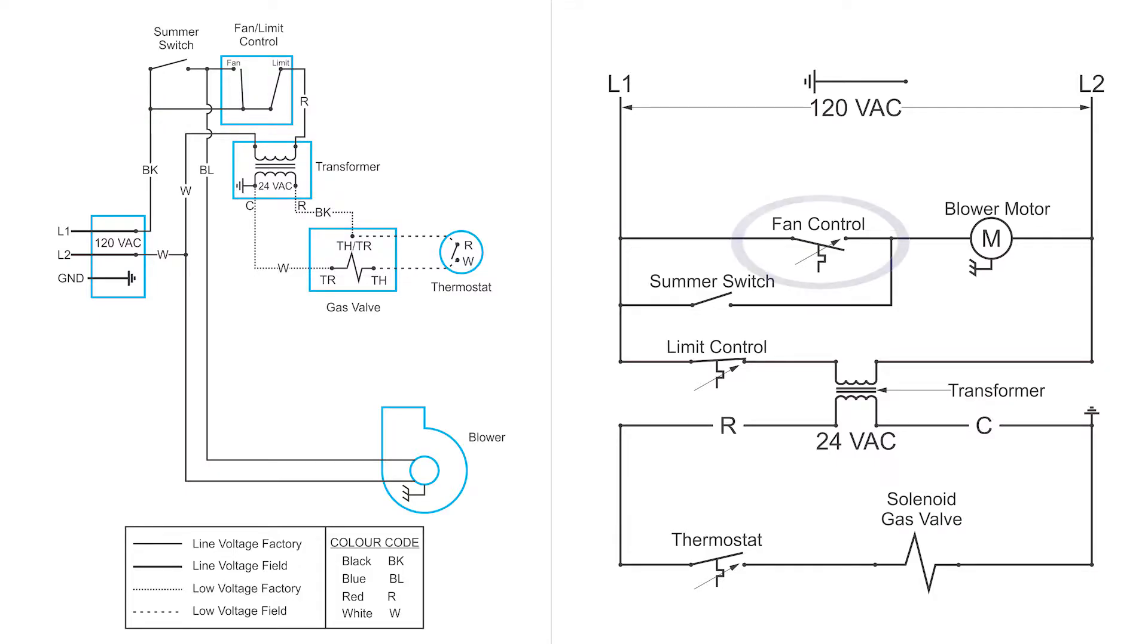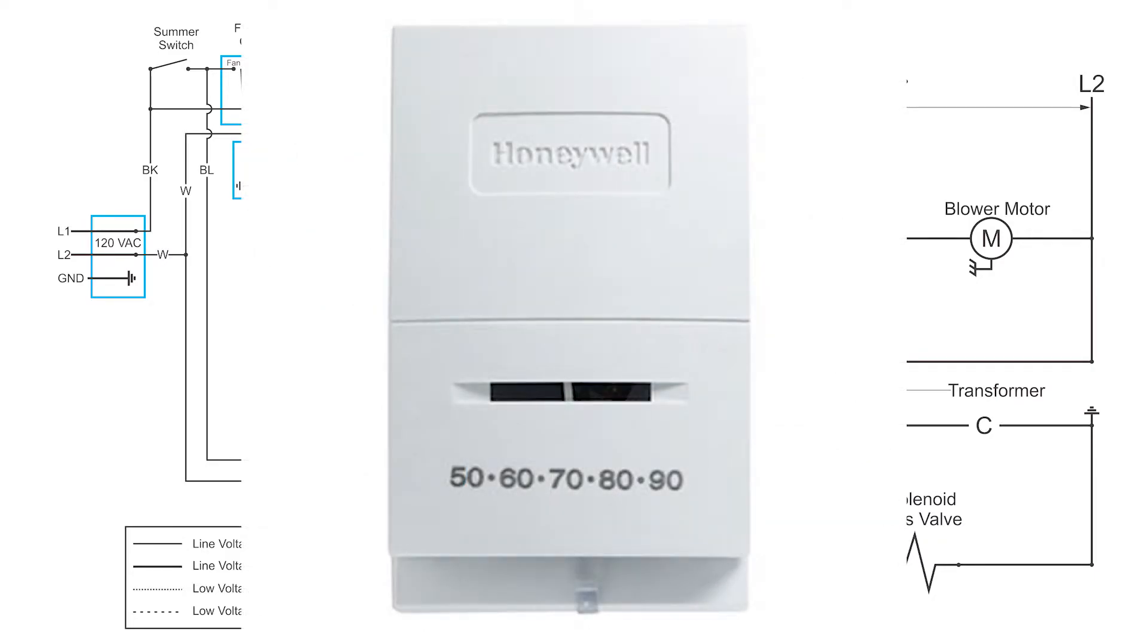The next thing is this angled arrow that are going over a bunch of these switches. Well that just means that these switches are adjustable. Take for example the thermostat. It has an adjustable set point that you can change for your comfort level.